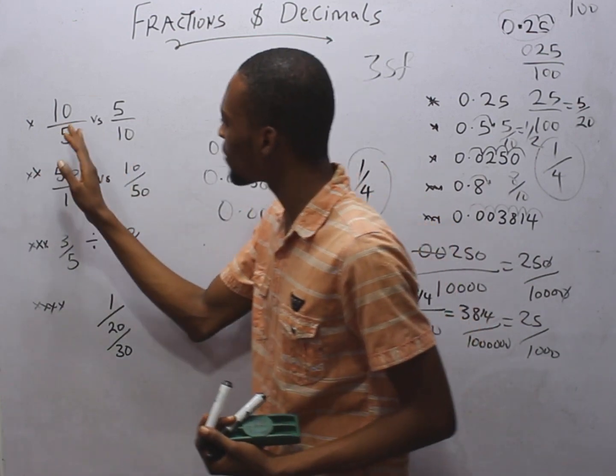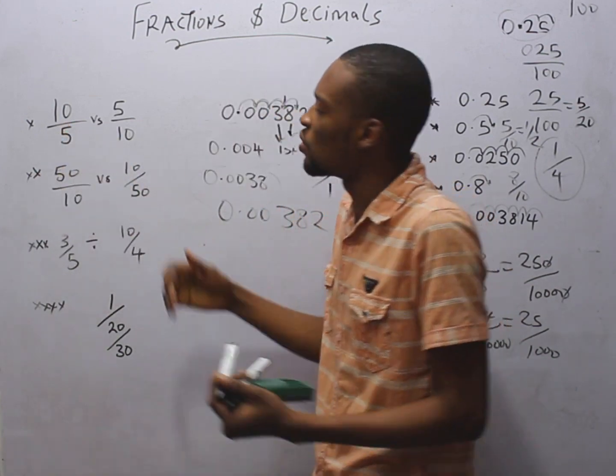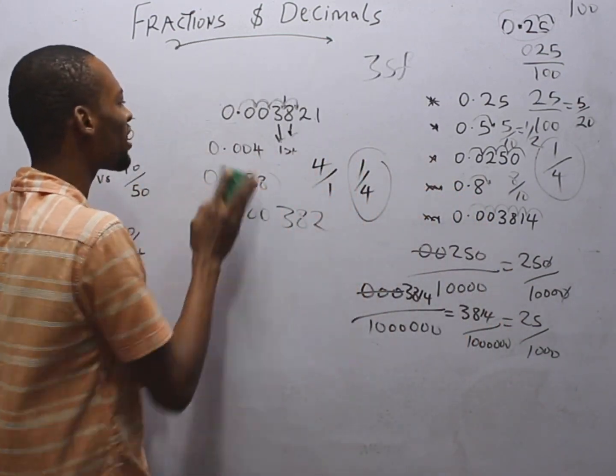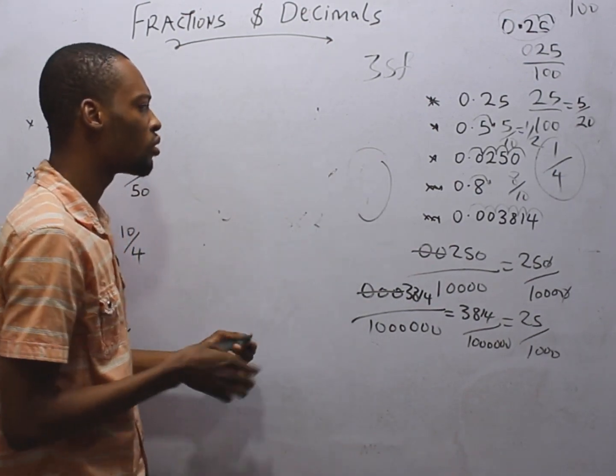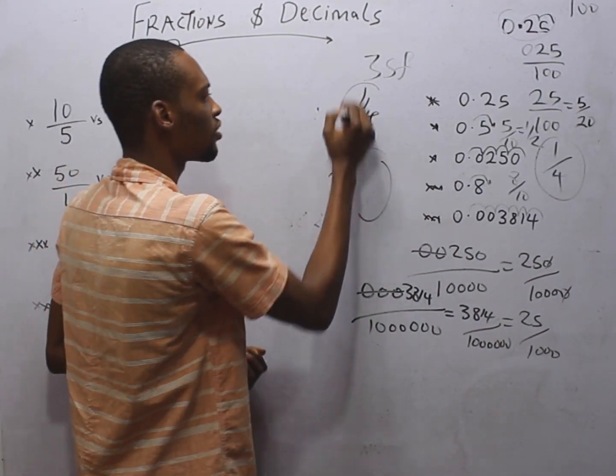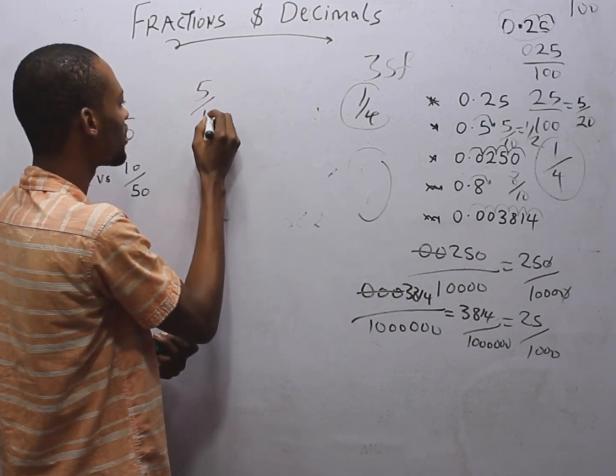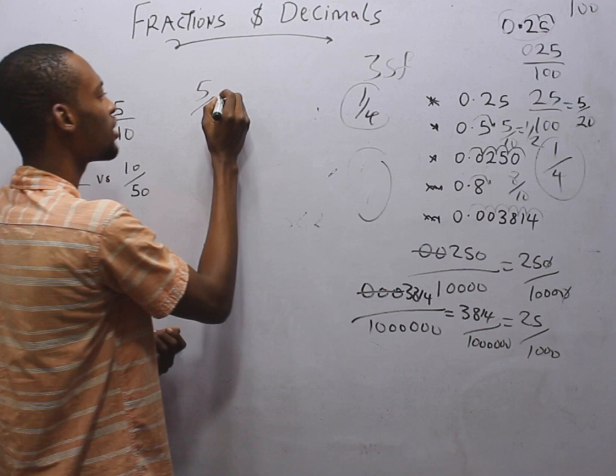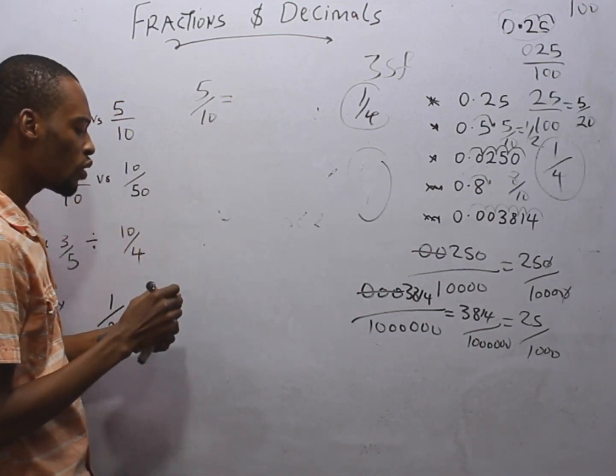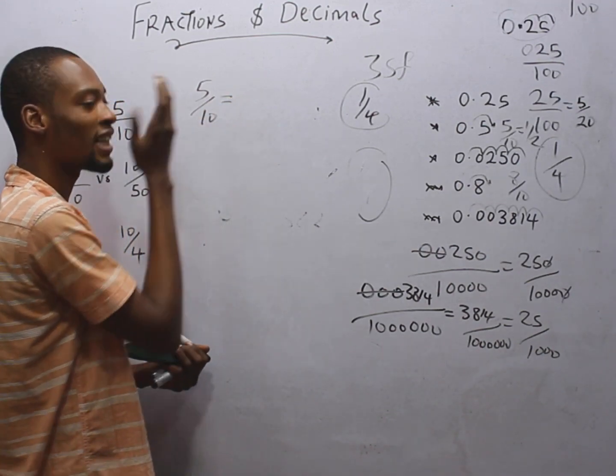How about something like this? If I say 10 divided by 5, it's 2. Correct. How about I say 5 divided by 10? How do you go about that? This is what you do.